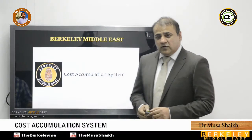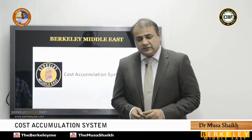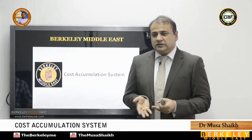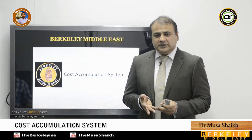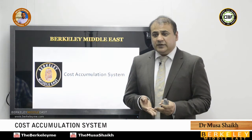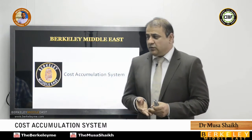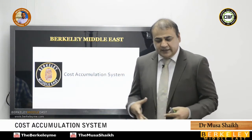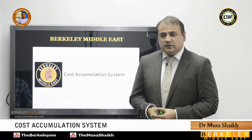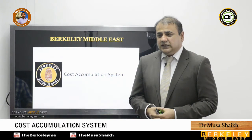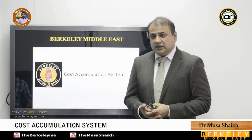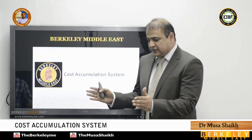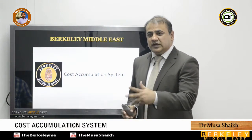What is the meaning of cost? When we say cost, it generally consists of direct material, direct labor, and overheads. A cost accumulation system means how we gather cost — because in practical manufacturing, you are buying raw material and using it for certain purposes.